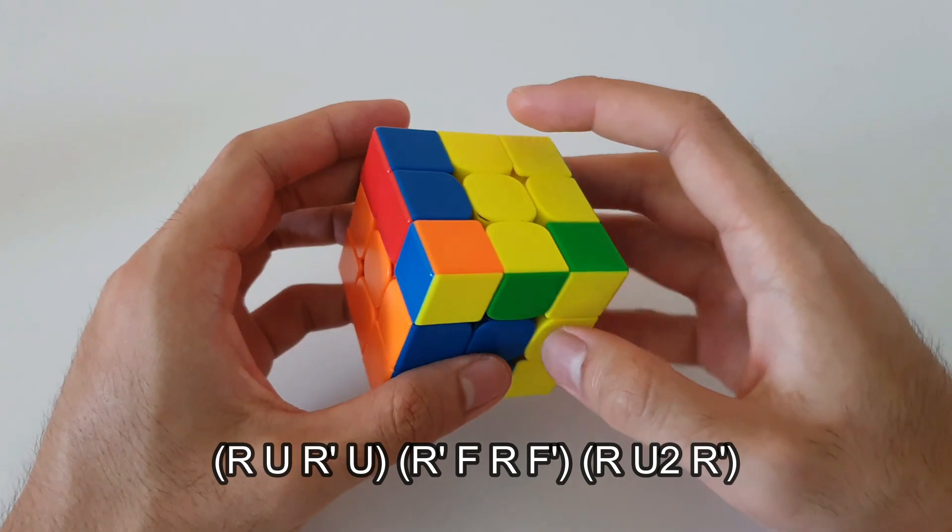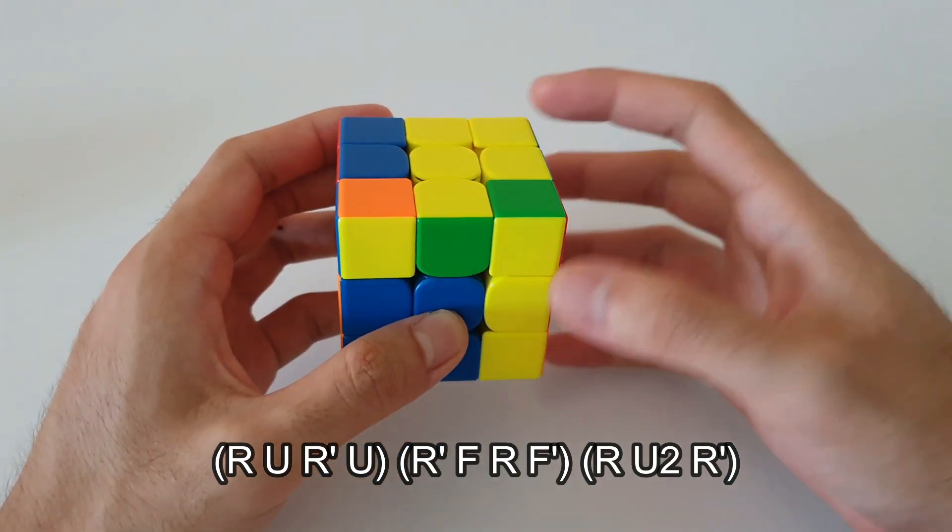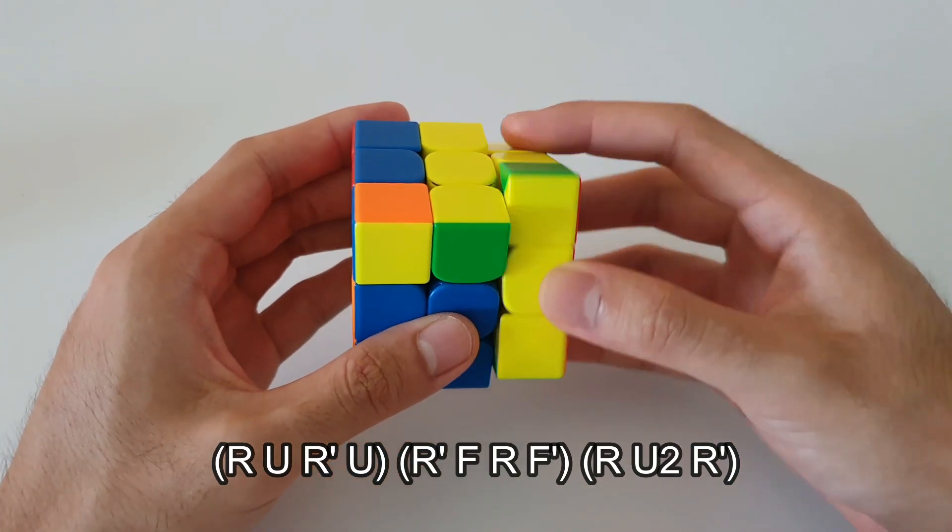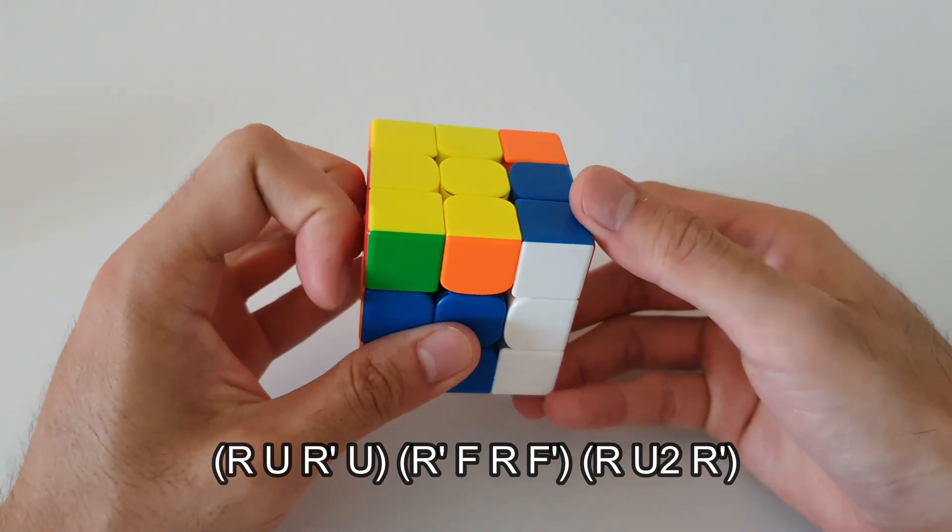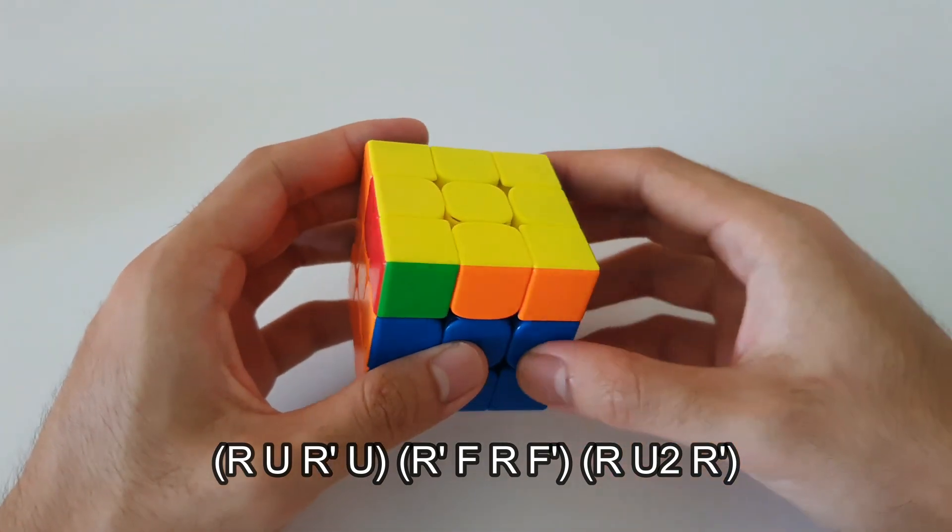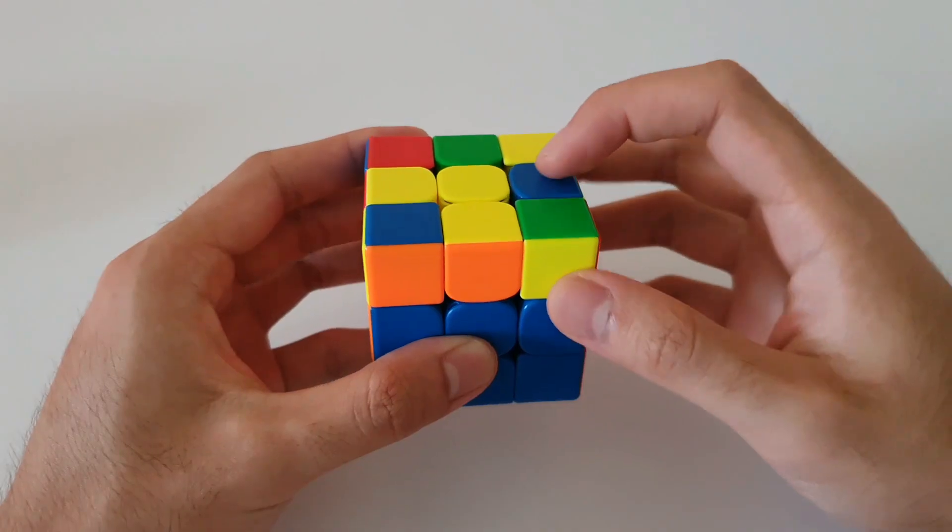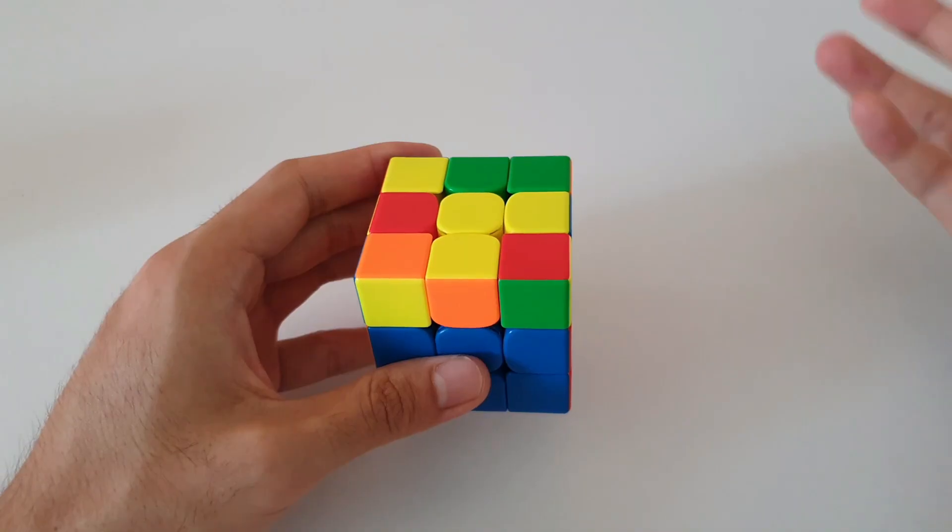Finally, you want to insert this F2L pair back into its slot with a U2. So that can be done like this. And that solves that OLL case. Alright,